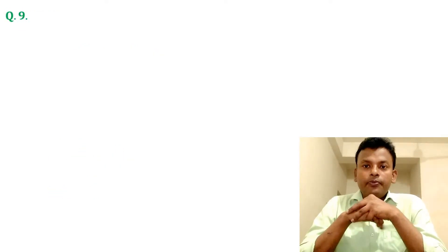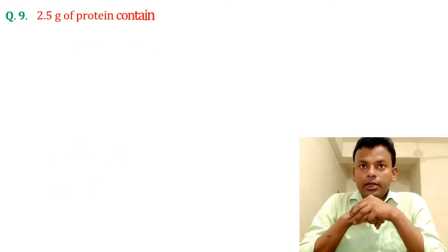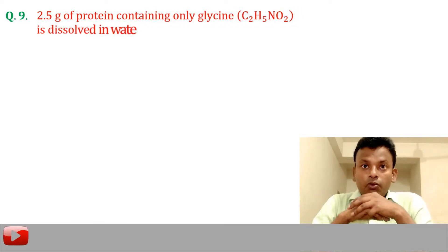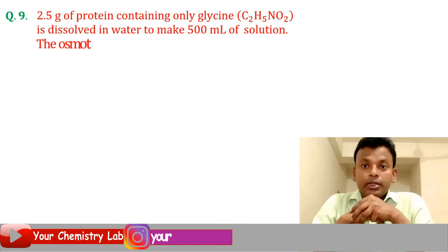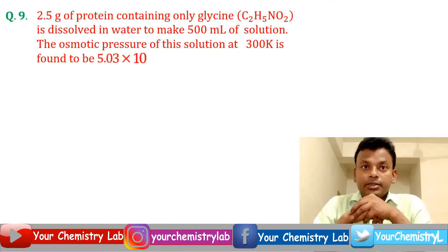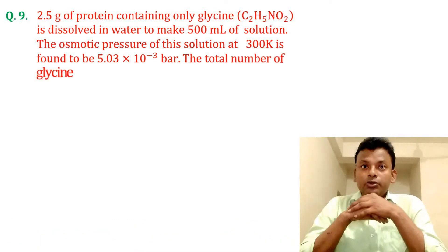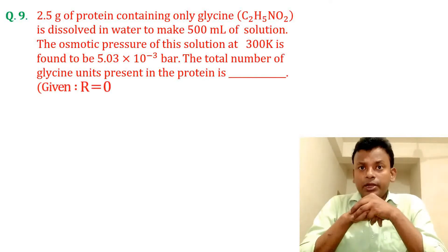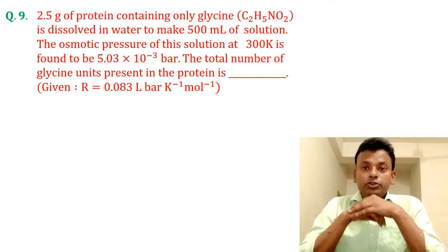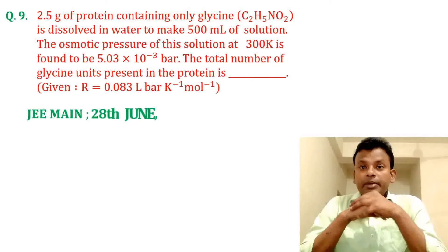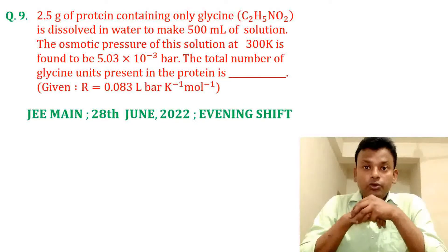Question 9: 2.5 gram of a protein containing only glycine (C₂H₅NO₂) is dissolved in water to make 500 ml of solution. The osmotic pressure of this solution at 300 Kelvin is found to be 5.03 × 10⁻³ bar. The total number of glycine units present in the protein is dash. Given R = 0.083 liter·bar per Kelvin per mole. This question was set in JEE Main 28th June 2022 evening shift.